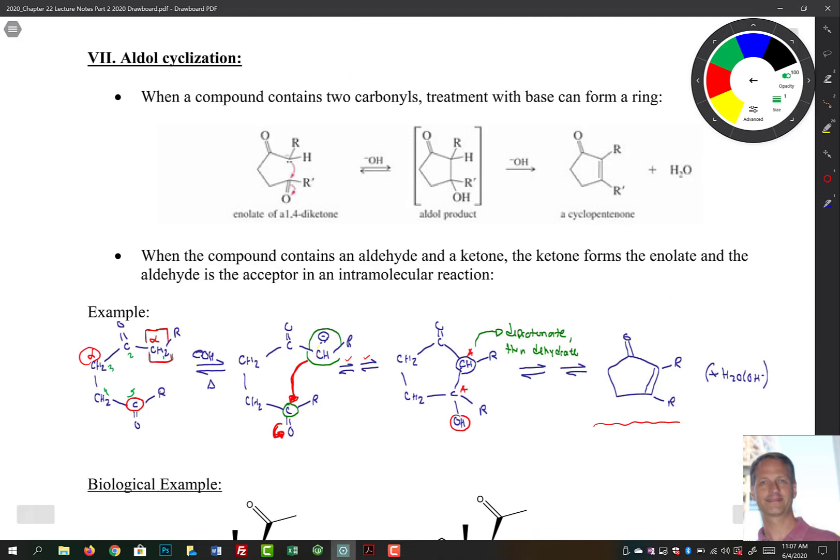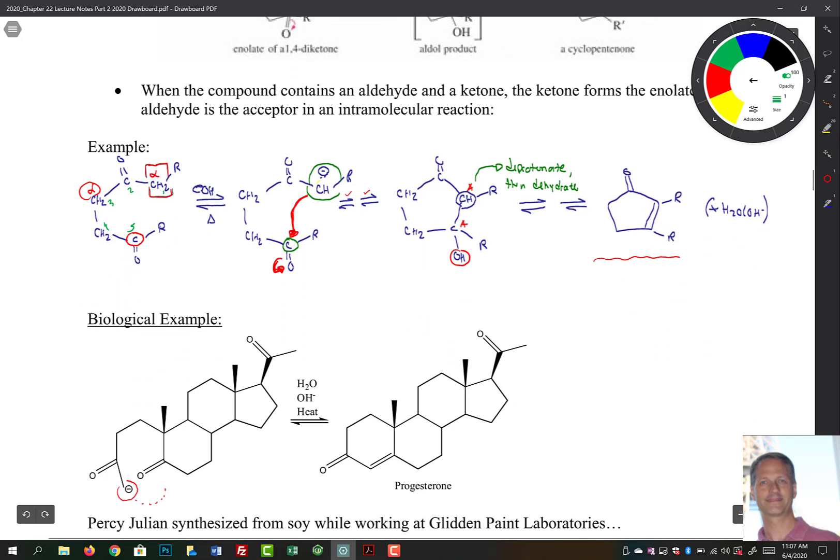So aldol cyclization can occur also, and it's actually a reaction that's used quite frequently, especially in things like steroid synthesis. So let's take a look at an example here. So here we have one compound that contains two carbonyls. So what we want to do is we want to deprotonate this in such a way and form an enolate that we form a stable number of carbon cyclic ring. So we want to have five, six, seven carbons, not three or four.